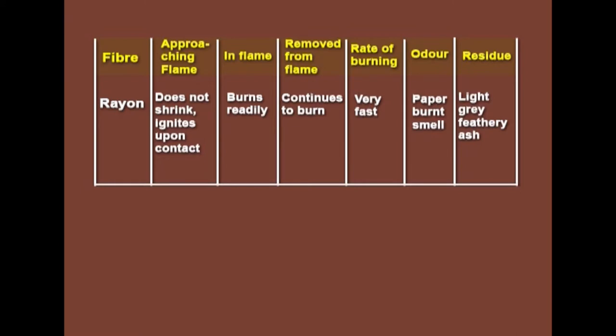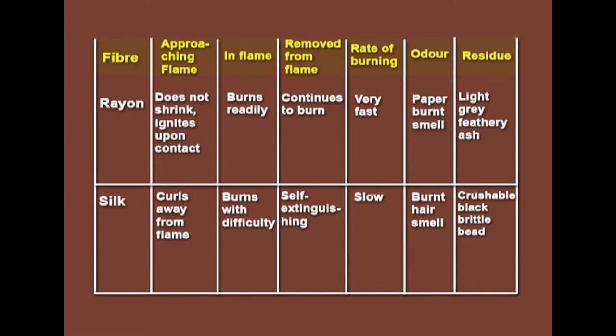Rayon is also a cellulosic fiber but man-made. It does not shrink but ignites upon contact. In the flame it burns readily and continues to burn after removing, with a very fast rate of burning. It gives a paper-burnt smell and leaves light gray feathery ash. Silk, a protein fiber, curls away from the flame when approached and burns with difficulty within the flame. Once removed from the flame it is self-extinguishing, with a low rate of burning. It gives a burnt hair smell and leaves a crushable black brittle bead that turns to ash when crushed.